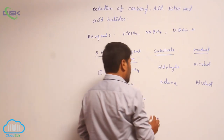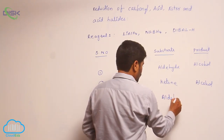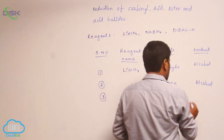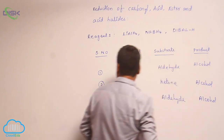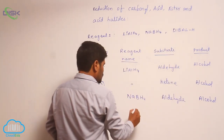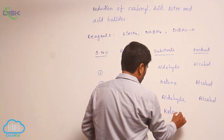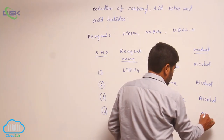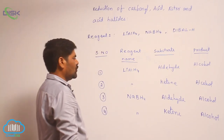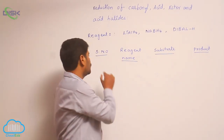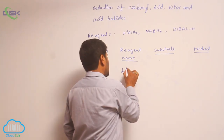Number three: sodium borohydride with aldehyde converts into alcohol. Number four: sodium borohydride with ketone converts into alcohol.